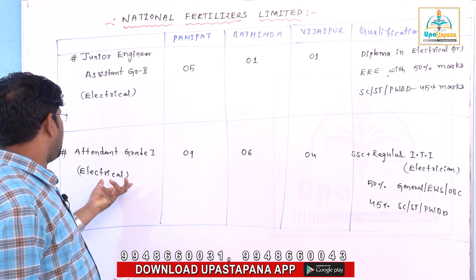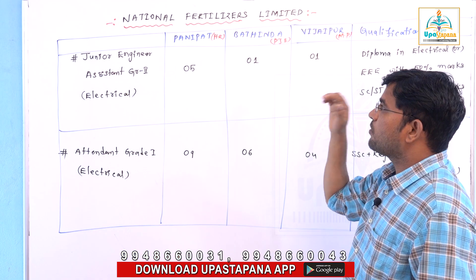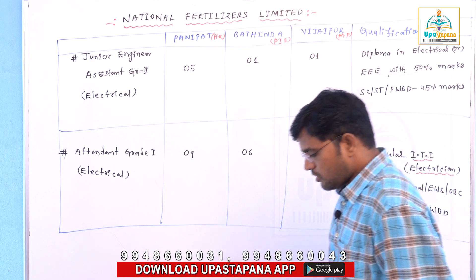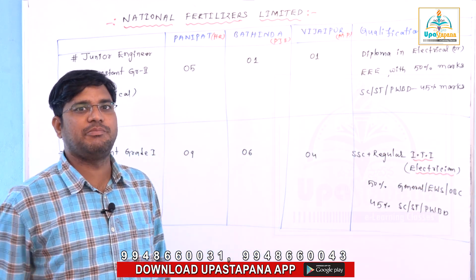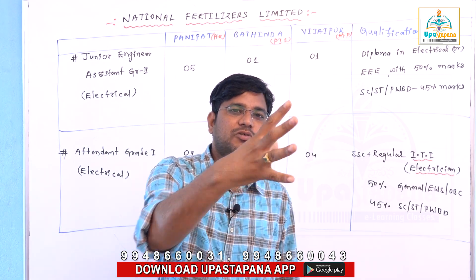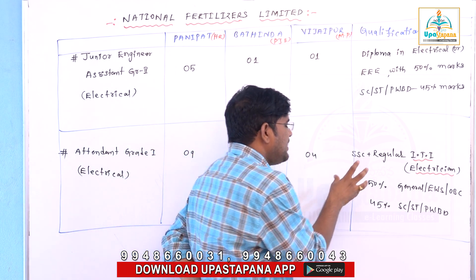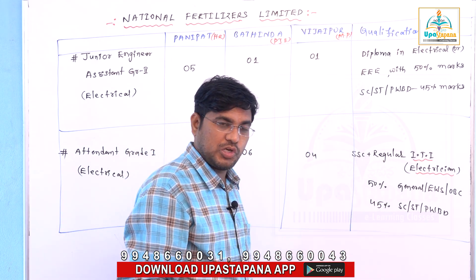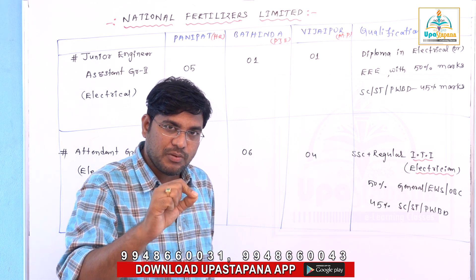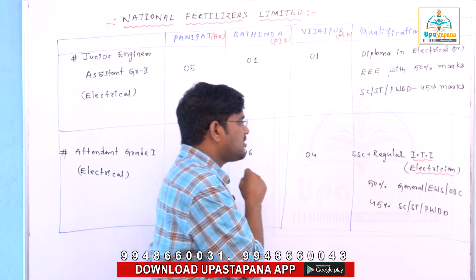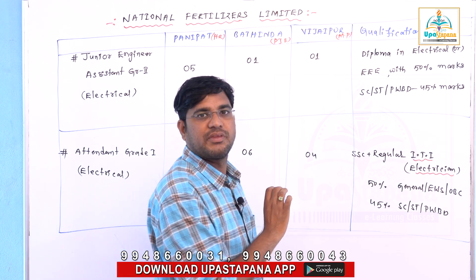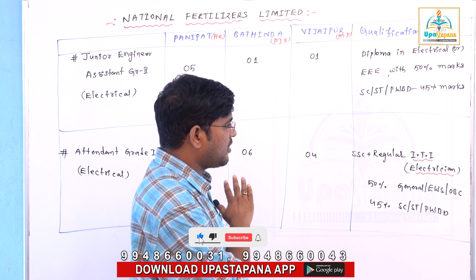The Attendant Grade 1 is electrical and the Junior Engineer is Grade 2. The units are in Haryana State, Punjab, and Vijayapur. There is no apprenticeship applicable here. The regular ITI course — specifically the electrician trade — is mentioned as applicable for this post. If you have different equivalent courses, they are not applicable.